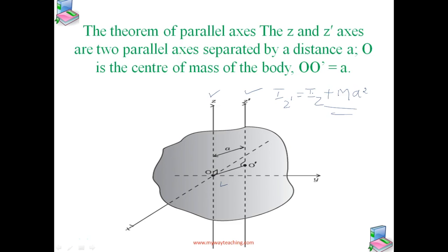Here Iz and Iz' are the moments of inertia of the body about the Z and Z' axes respectively. M is the total mass of the body and A is the perpendicular distance between the two parallel axes. So the theorem states that the moment of inertia about any axis Z' equals the moment of inertia about a parallel axis through the center of mass plus MA².